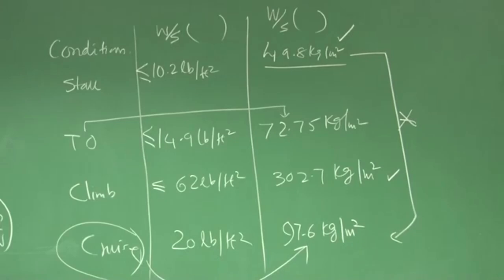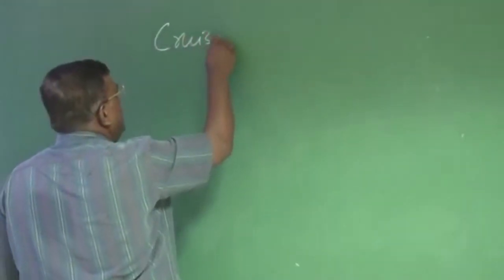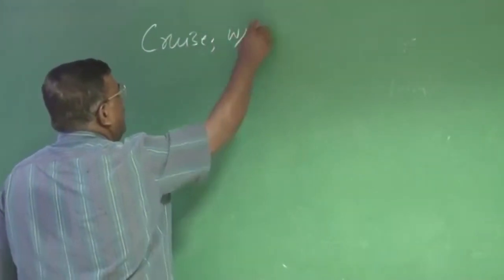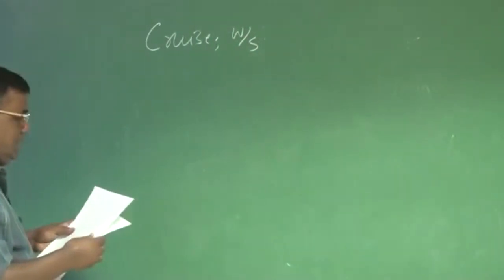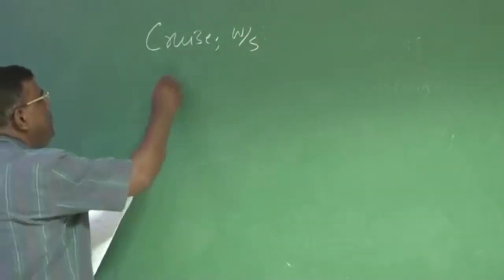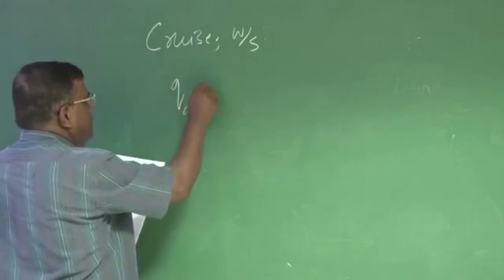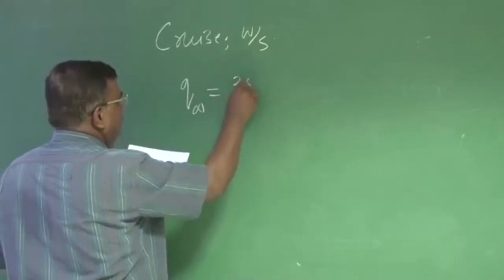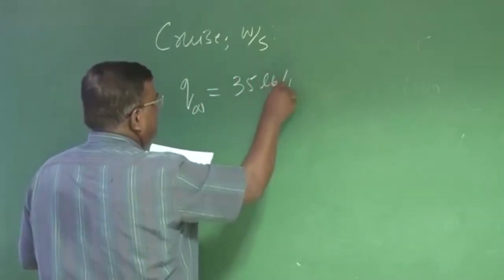Also understand one more thing. When I closely see the cruise data, which will help you in making a decision. Let us be careful about what is the cruise W by S we are talking about. How did you calculate W by S? We assumed the dynamic pressure as 35 pounds per feet square.